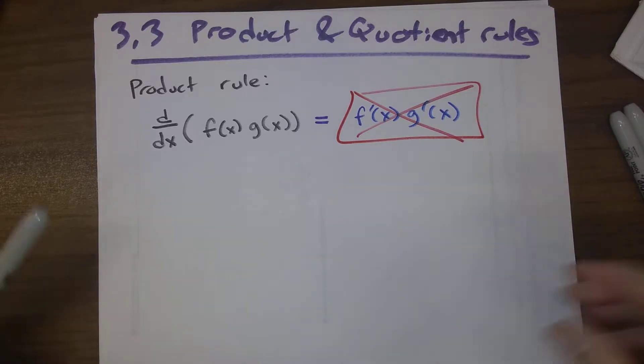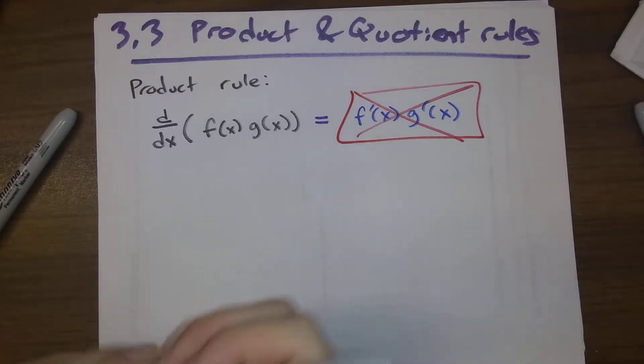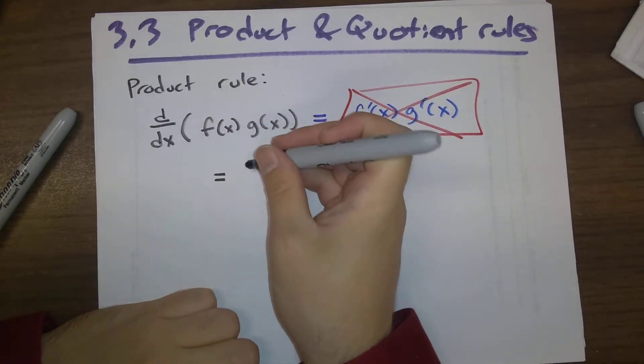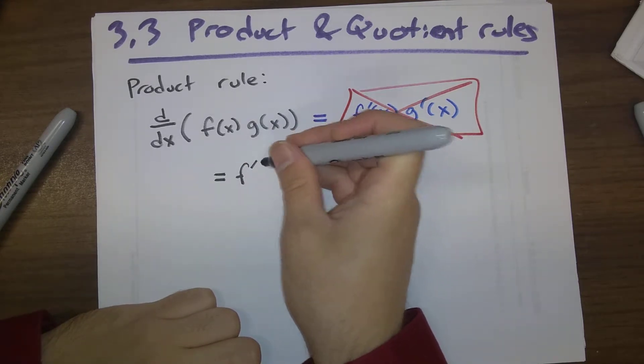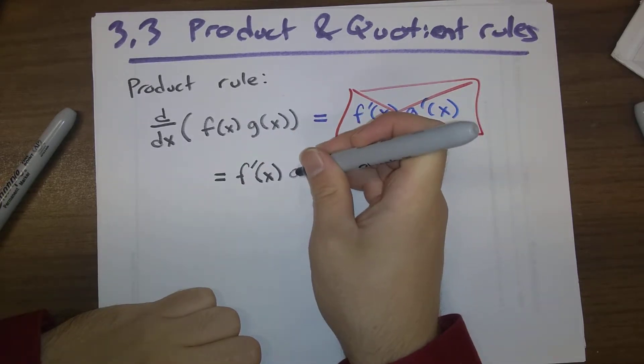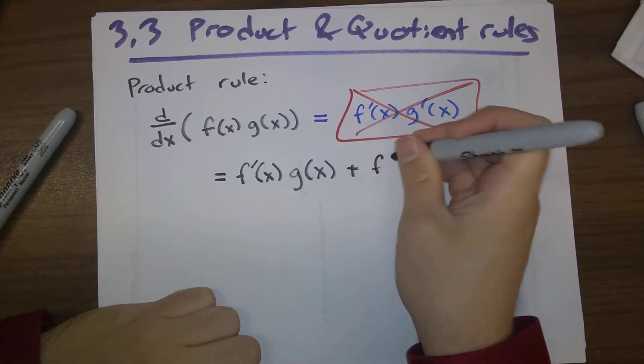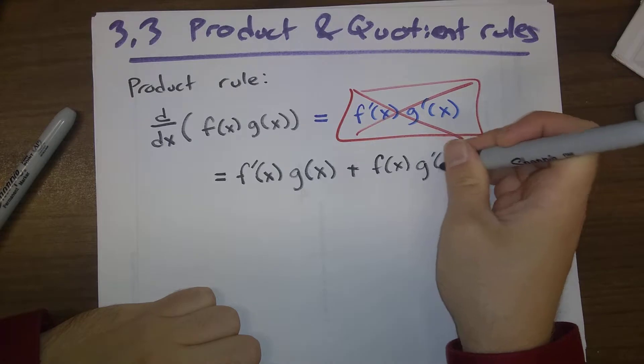So instead, the product rule is maybe the first kind of unexpected rule that we have. As it turns out, the derivative of a product is f'(x) times g(x) plus f(x) times g'(x).